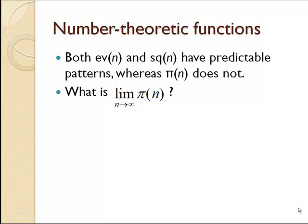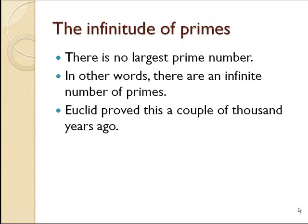What do you suppose the limit of pi(n) is as n goes to infinity? That is, what is the behavior of the function that counts the number of prime numbers? It turns out that the limit of that function is infinity as n goes to infinity. There is no largest prime number. Earlier we talked about the largest known prime number, but that's not the biggest prime — we just don't know any that are bigger than that. In other words, there's an infinite number of primes, and Euclid proved this a few thousand years ago.